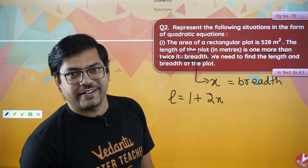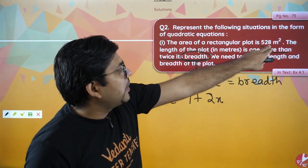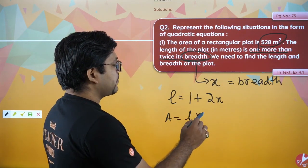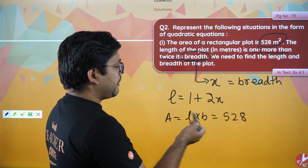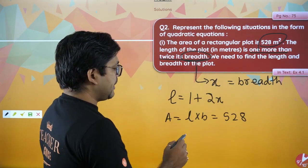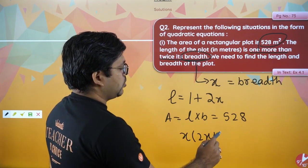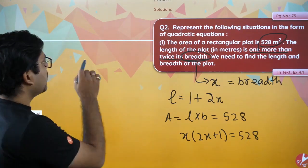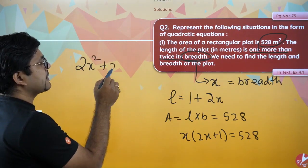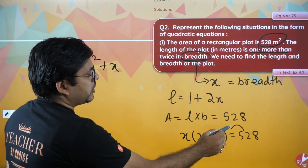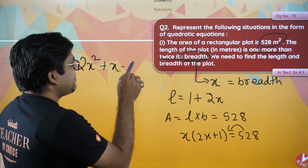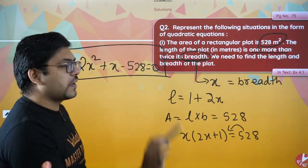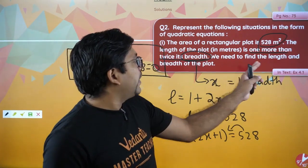So length equals 2x plus 1, and breadth equals x. Now we use: Area = length × breadth. So the equation becomes x into (2x + 1) equals 528. Rearranging, we get 2x² + x minus 528 equals zero. Remember, we just need to form the equation here, not necessarily solve it.